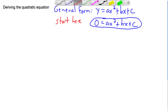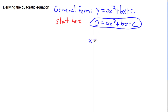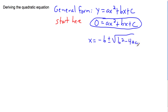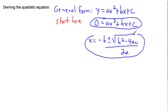The idea is to finish with the quadratic equation, which is x equals minus b plus or minus the square root of b squared minus 4ac, all over 2a. So we want to finish there.